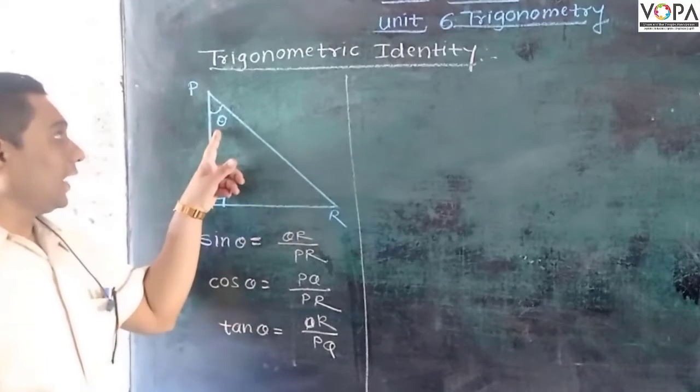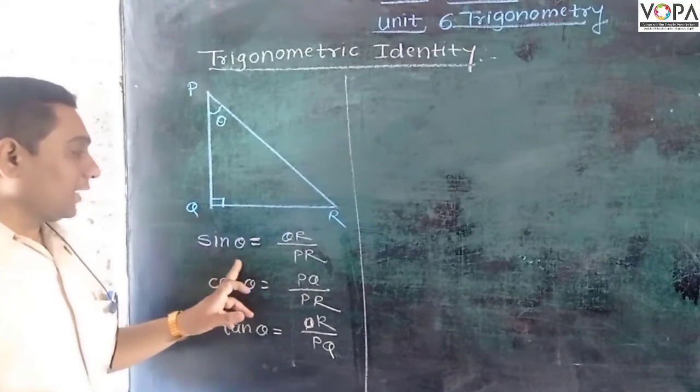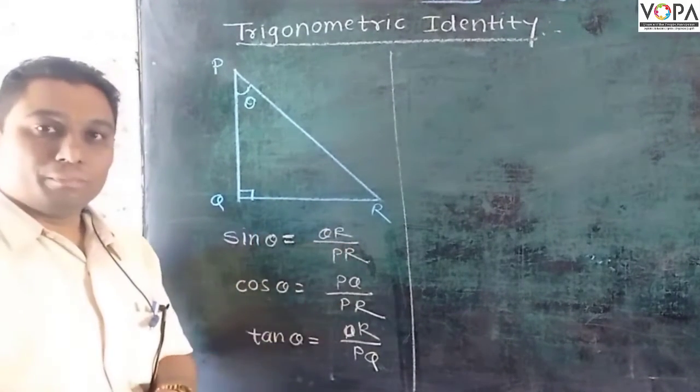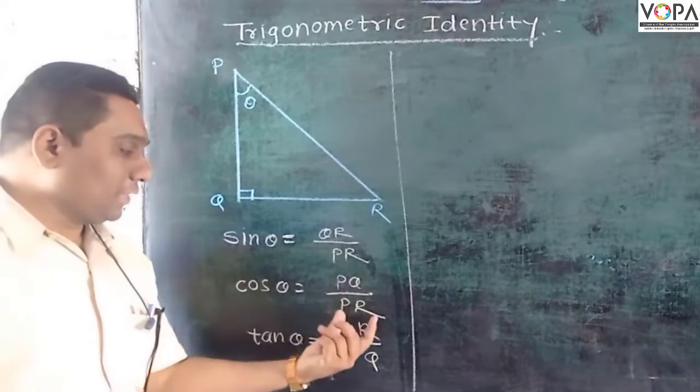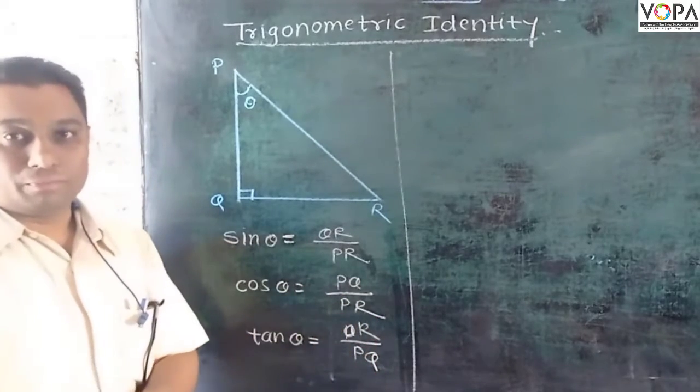In this triangle, angle P is theta. So what is the sine ratio for angle theta? It is the opposite side QR upon PR. Cos theta is PQ upon PR, and tan theta is QR upon PQ.